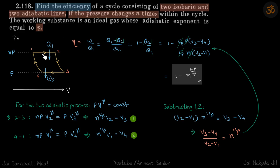Find the efficiency of a cycle which has two isobaric lines and two adiabatic lines. It's also given that during the process pressure increases n times. So let's find the efficiency. Efficiency is W by Q1, and here the work done is positive so Q1 is positive. Here the heat is taken in and here the heat is released. So work is Q1 minus mod of Q2 by Q1. This is our efficiency which we need to find.